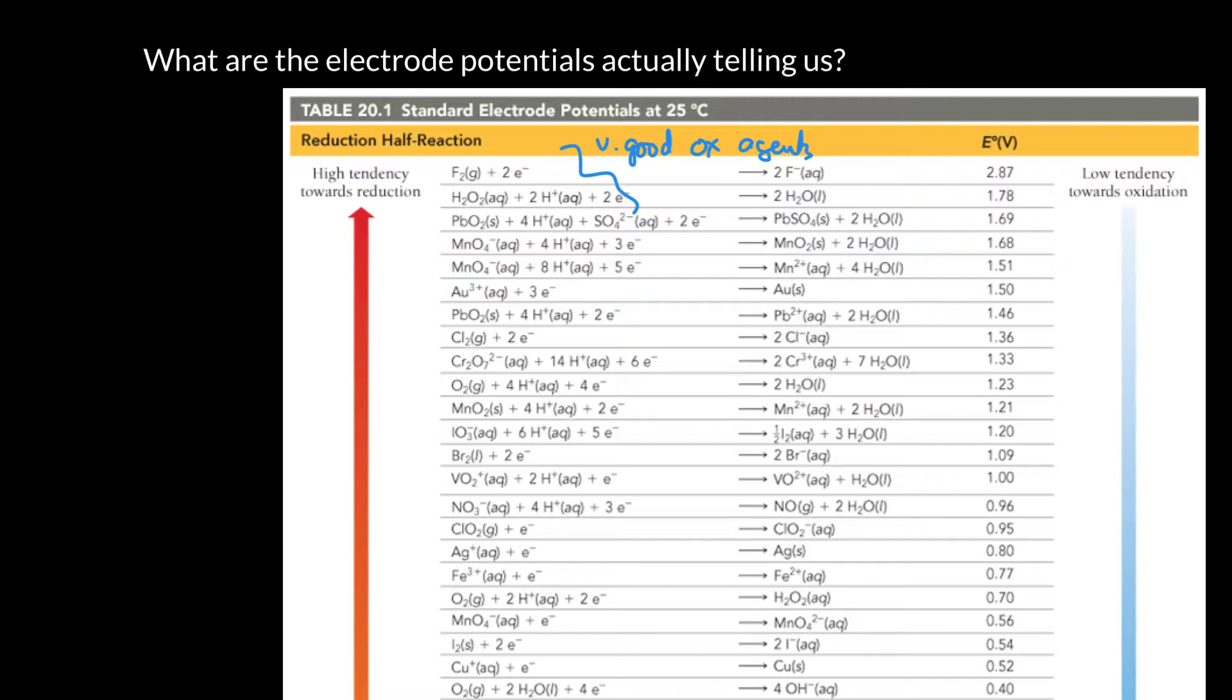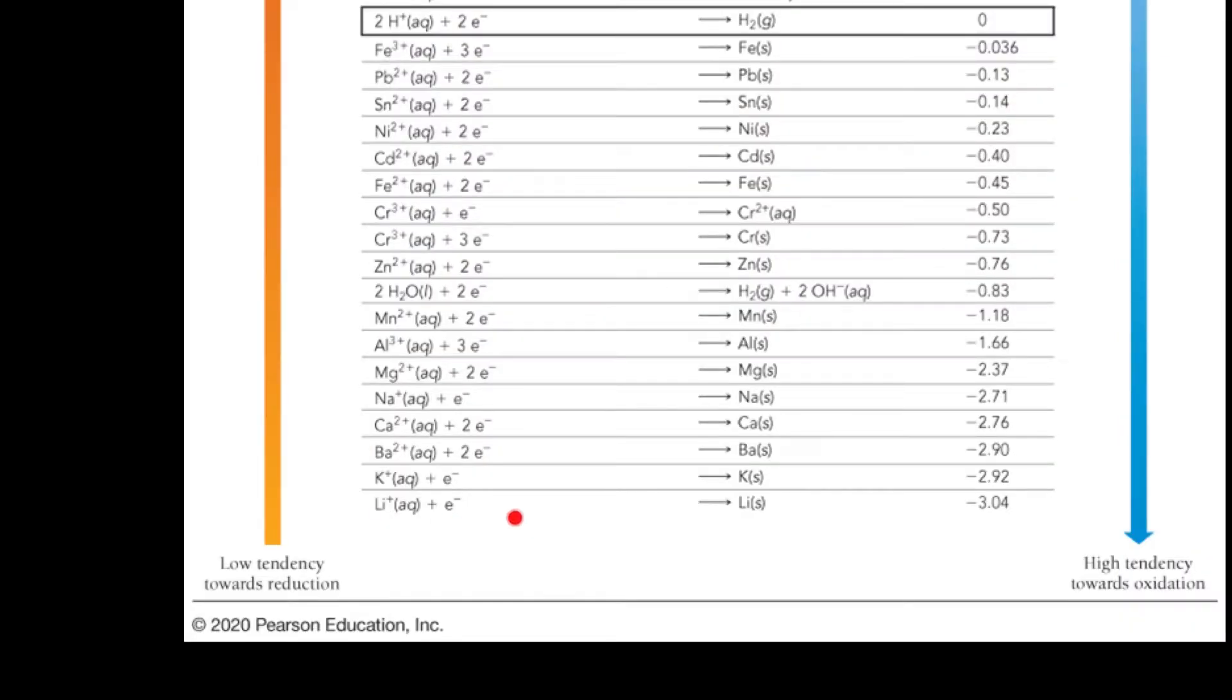So conversely, if we go all the way down to the bottom of the list, what we find is that these reactions don't go very favorably in the forward direction. So that negative voltage tells us that those lithium ions really do not strongly attract electrons.